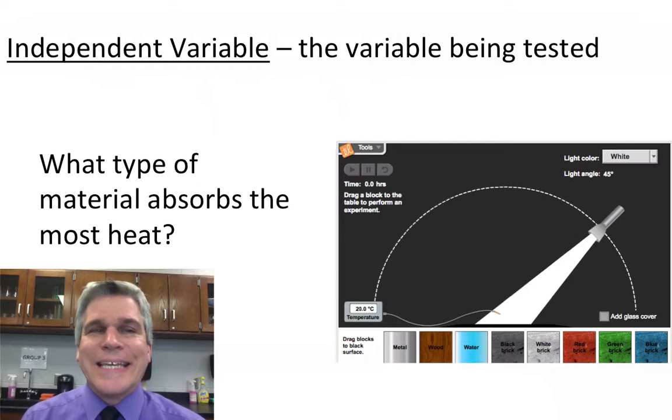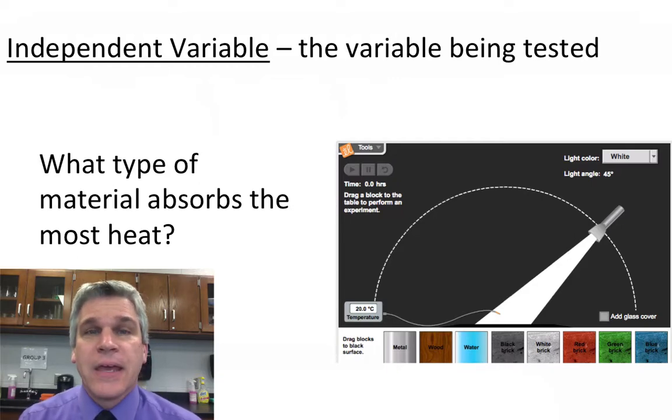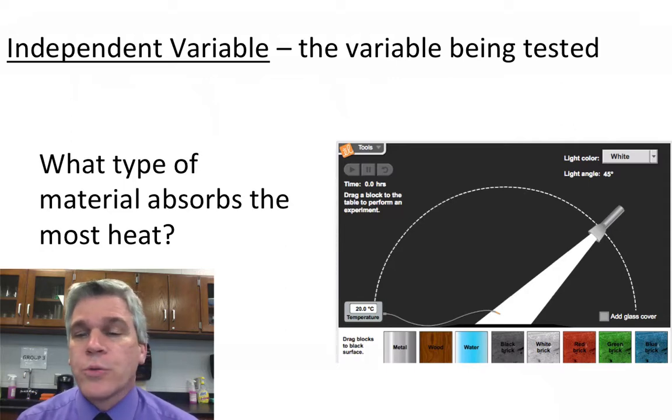The first one is the independent variable. That is the variable being tested. In essence, it's what we want to know about as a science problem. Look at this example. The question is, what type of material absorbs the most heat?